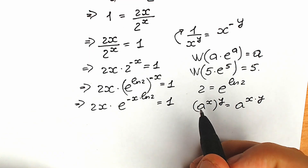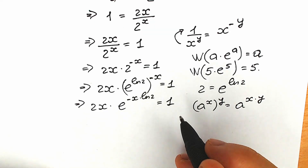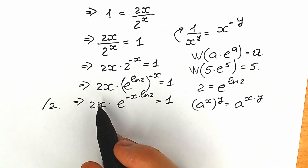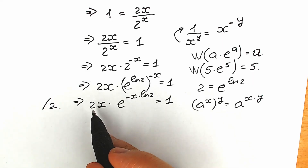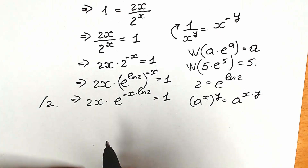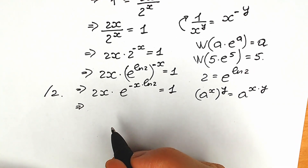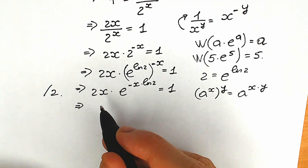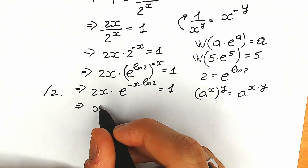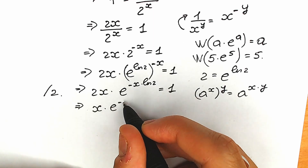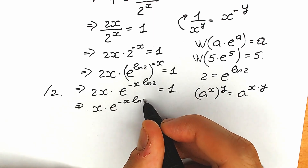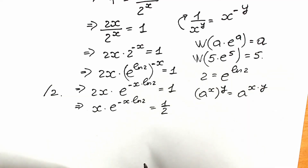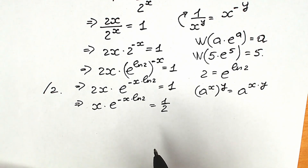The next thing we're going to do is divide both sides by 2. When we divide both sides by 2, we will have variables on the left side and one half on the right. As a result, we cancel the 2 from the left side and get x times e to the power minus x times natural log 2, equal to one half.